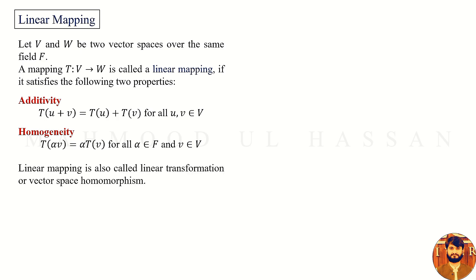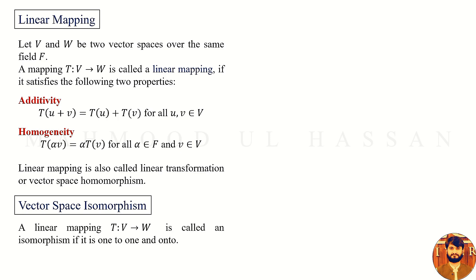A linear mapping is also called a linear transformation or vector space homomorphism. Another concept is vector space isomorphism. A linear mapping T from vector space V to vector space W is called an isomorphism if it is one-to-one and onto, that is, if it is a bijective mapping. In other words, T is a vector space isomorphism if it is both a linear mapping and a bijective mapping.